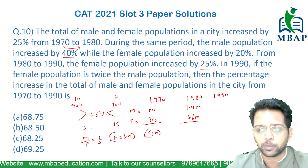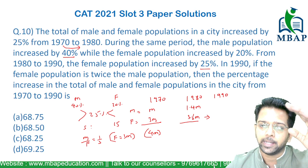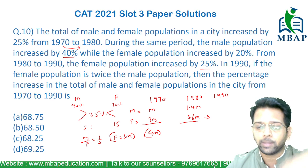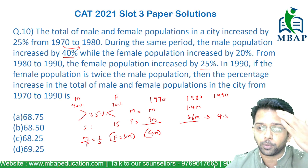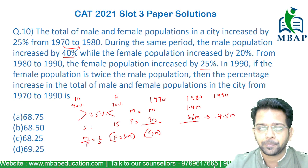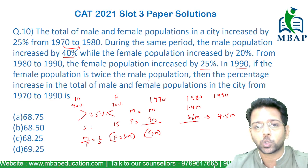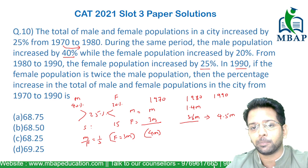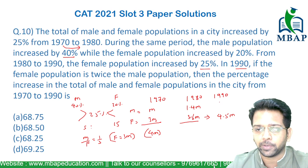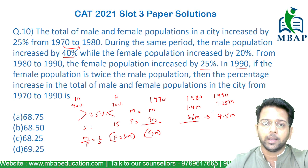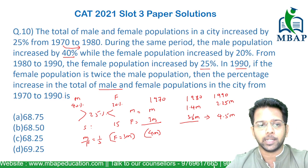From 1980 to 1990, the female population increased by 25%. So 25% of 3.6m gives 0.9m, making it 4.5m. In 1990, the female population is twice the male population, so male will be half of 4.5m, which is 2.25m.